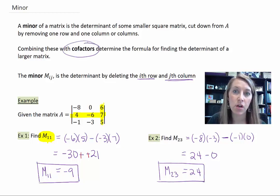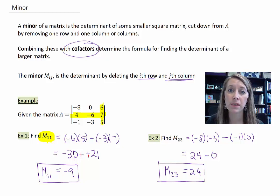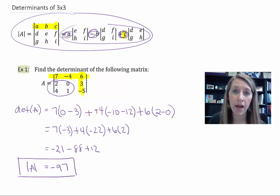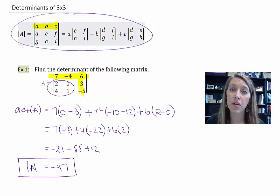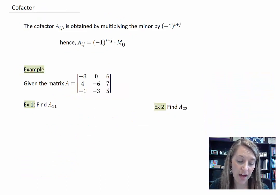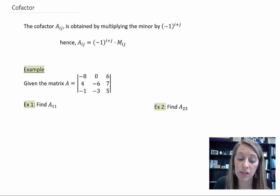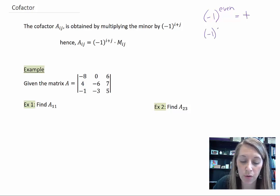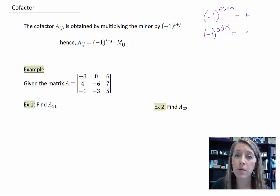Now we need to combine minors with cofactors to get our overall matrix determinant. The cofactor talks about the sign. Notice in our formula we have a positive a value, a negative b value, and a positive c value — that is dependent on the cofactor. The cofactor is obtained by multiplying the minor by a sign: negative 1 to the i plus j, where i is the row and j is the column. If negative 1 is raised to an even power it's positive; to an odd power it's negative.